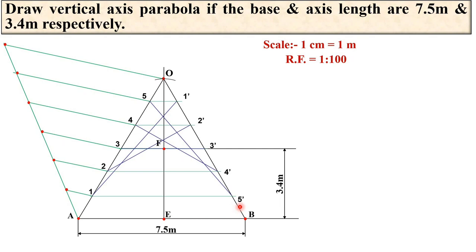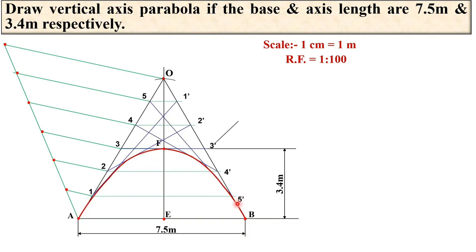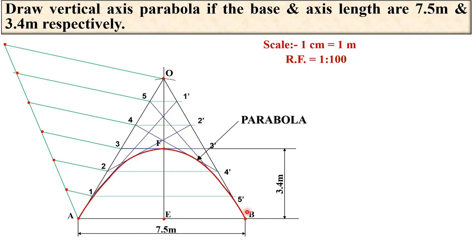Now join 1 to 1′, 2 to 2′, 3 to 3′, 4 to 4′, and 5 to 5′. The very important point: draw the curve such that all these lines are tangent to the curve. Here you can see the curve drawn in red is the parabola, and all the blue lines are tangents to this parabola — that is why it is called the tangent method.